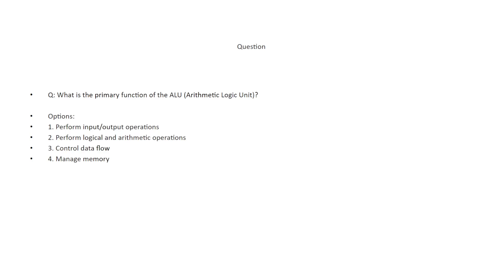What is the primary function of the ALU — Arithmetic Logic Unit? The options are: perform input and output operations, perform logical and arithmetic operations, control data flow, and manage memory. The correct answer is perform logical and arithmetic operations. Sometimes just by looking at the terms in the question you can estimate the answer — arithmetic is already in the question itself.